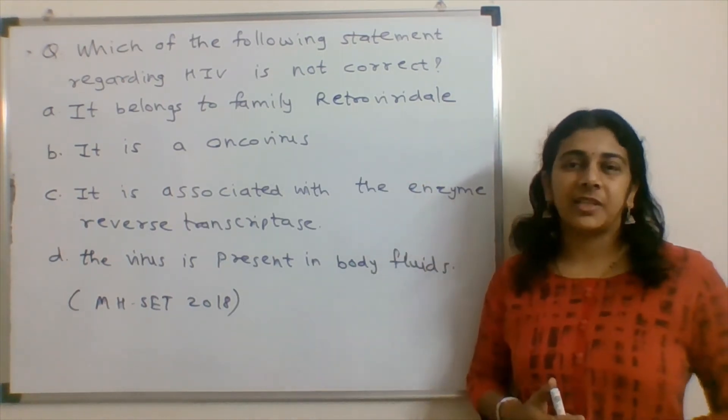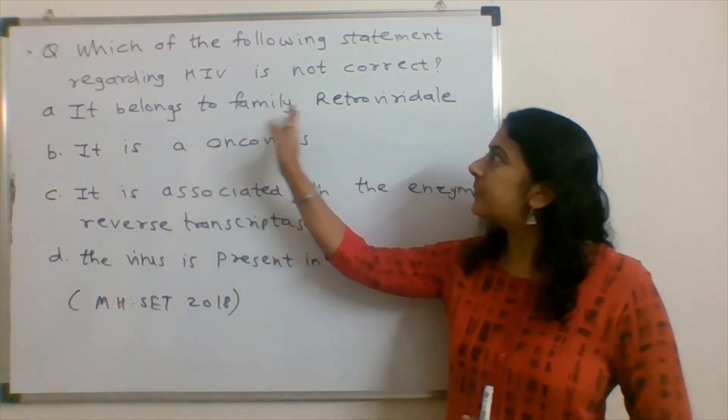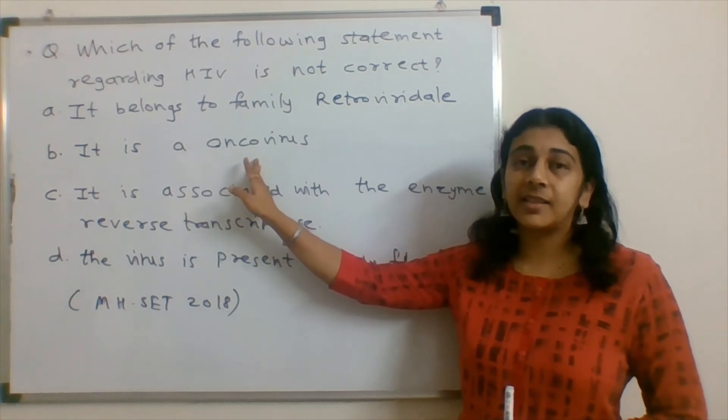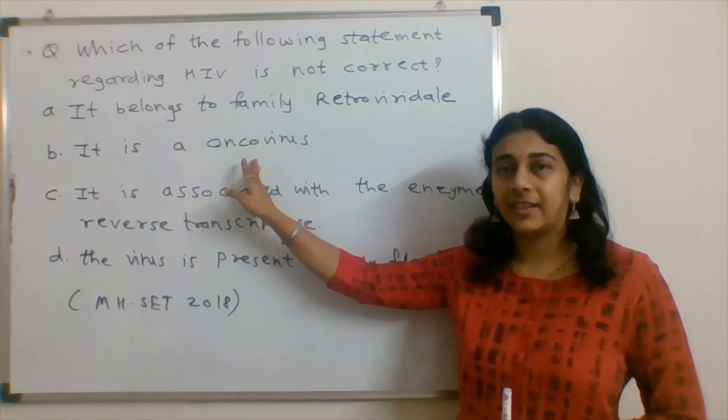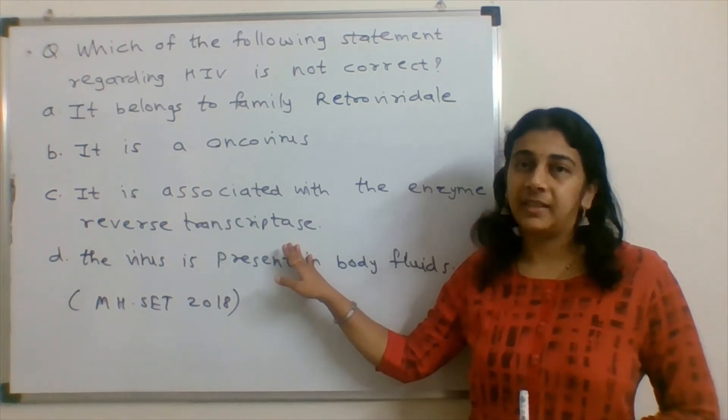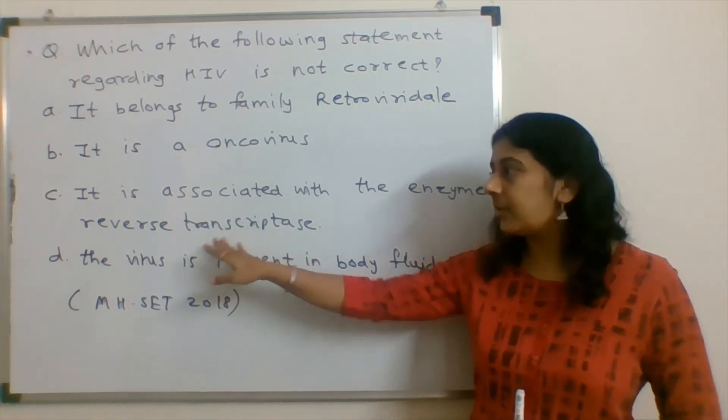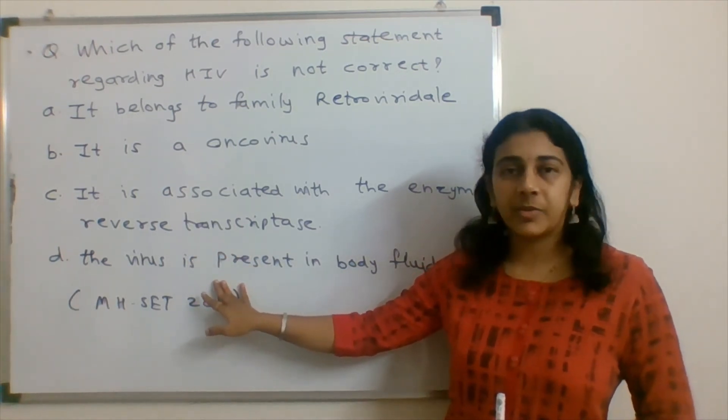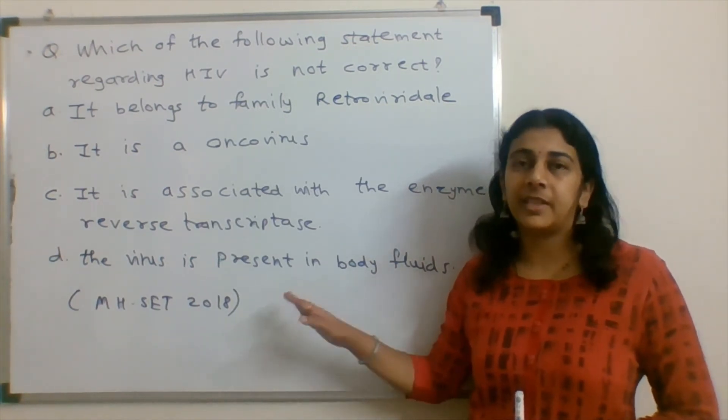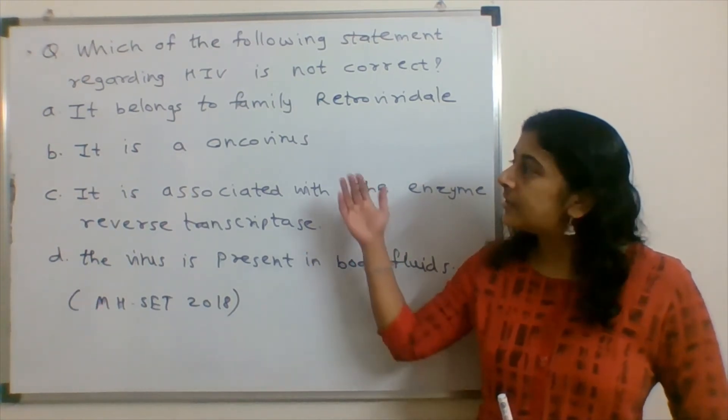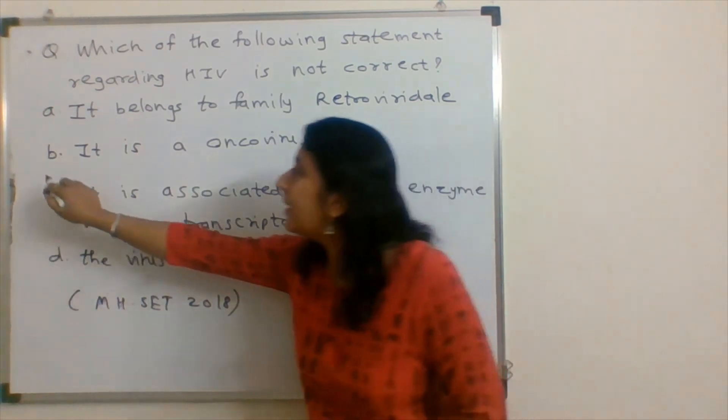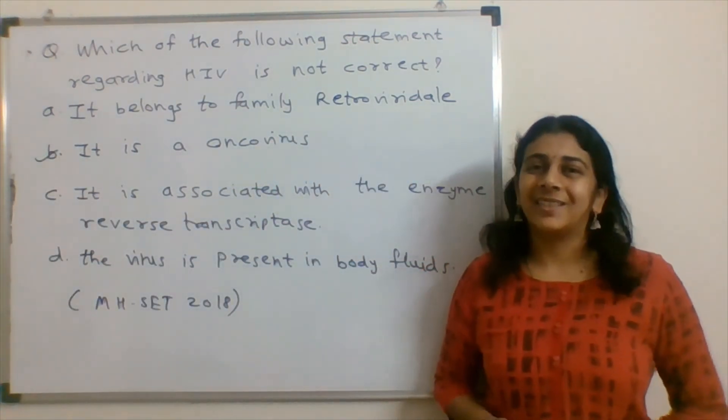When we look at the options we find that HIV belongs to family Retroviridae - this is correct. It is an oncovirus - this is a wrong statement, it doesn't cause cancer. Option C is it is associated with the enzyme reverse transcriptase - this is correct. And the last option says the virus is present in body fluids, so this is also a correct statement for HIV. So with this we can say that option B is the wrong statement for HIV and option B is thus the answer for our question.